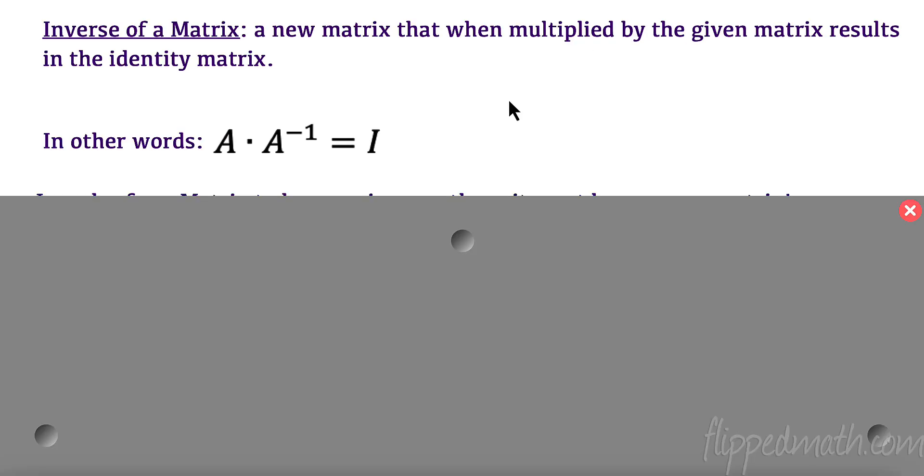Now, why is that important? Well, it's important because the inverse of a matrix is a matrix that, when multiplied by a given matrix, results in the identity. So, if I had matrix A, and I multiply by the inverse of that, I would get my identity matrix. Much like if I have a number 2, and I multiply by the inverse of that number, I get 1. Very similar.